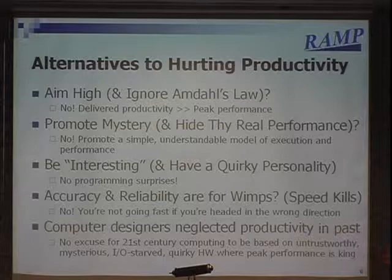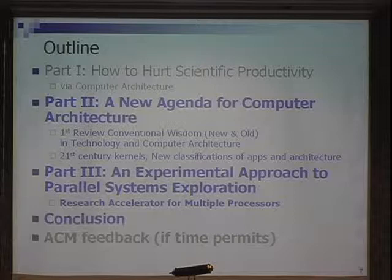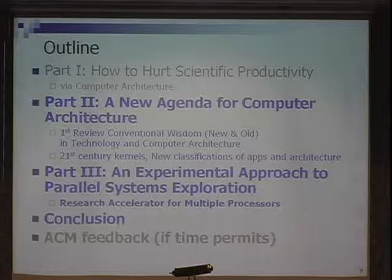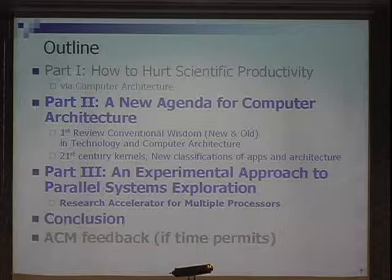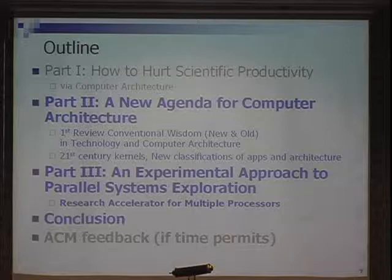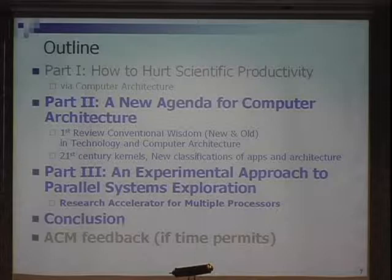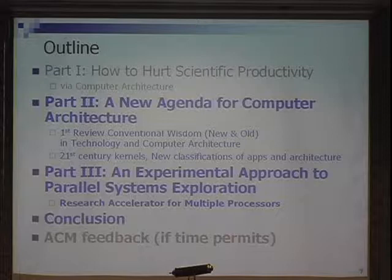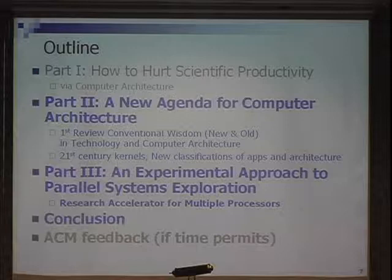That was the first opening salvo of my talk. Now I've got two new parts. Part two — nobody's ever seen this before — let's think about new ways of doing computer architectures in the 21st century. I'm going to start by talking about what's changed over the years: old conventional wisdom and new conventional wisdom. Then I'm going to talk about a new way of doing computer architecture, looking toward the future rather than the past. And part three will talk about new ways of building computers compared to the past.